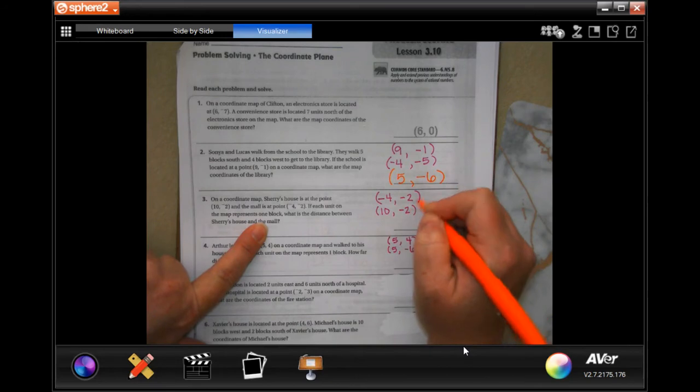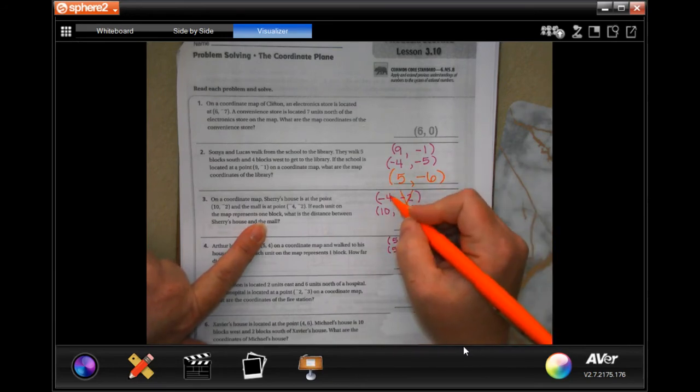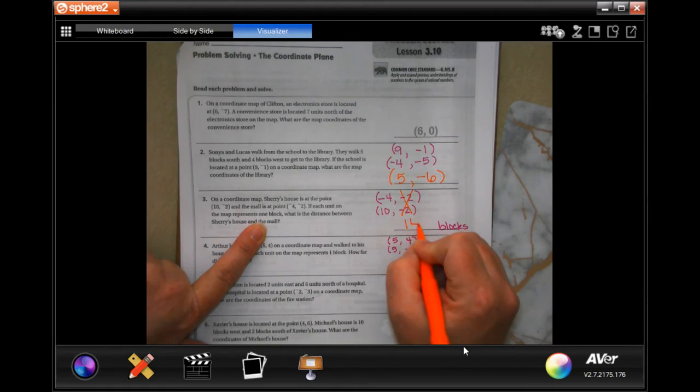Well, you'll notice that both of these are negative 2. Done. Now, I just need to know the difference between negative 4 and 10. When you have a negative and a positive, you add them. So that's going to be 14 blocks.